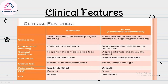In revealed placental abruption, symptoms are abdominal discomfort followed by vaginal bleeding; bleeding is dark, continuous; general condition is proportionate to visible blood loss; uterine height is proportionate to gestational age; uterine feel is normal with local tenderness; fetal parts are easily identified; fetal heart sounds are present. In mixed abruption, there is acute intense abdominal pain followed by slight vaginal bleeding; blood-stained serious discharge; disproportionate shock; enlarged uterus; tense, tender and rigid uterus; fetal parts are difficult to identify; fetal heart sounds are absent.